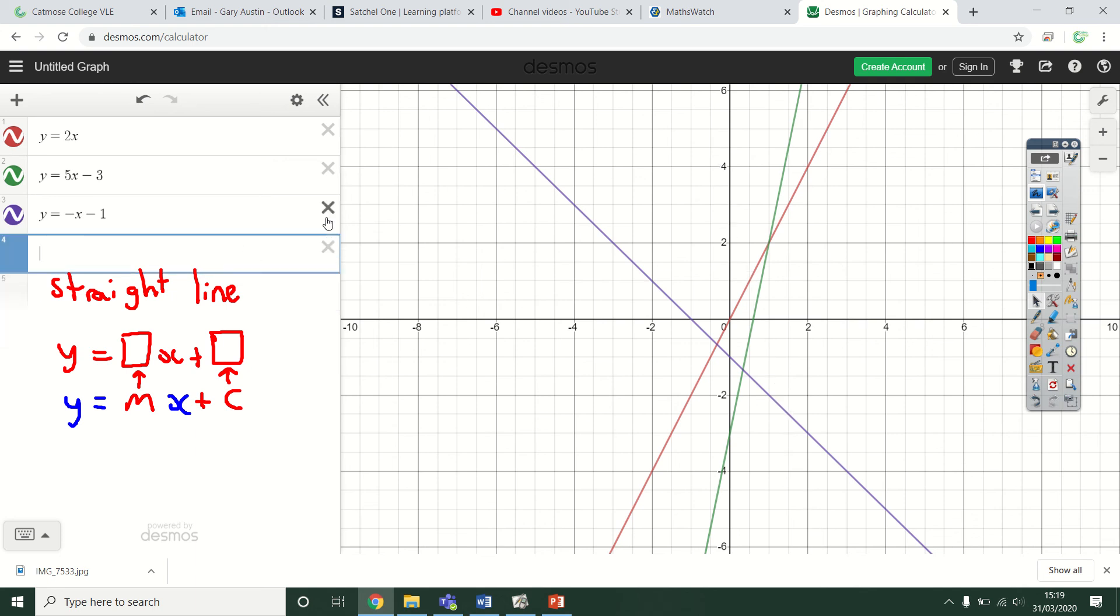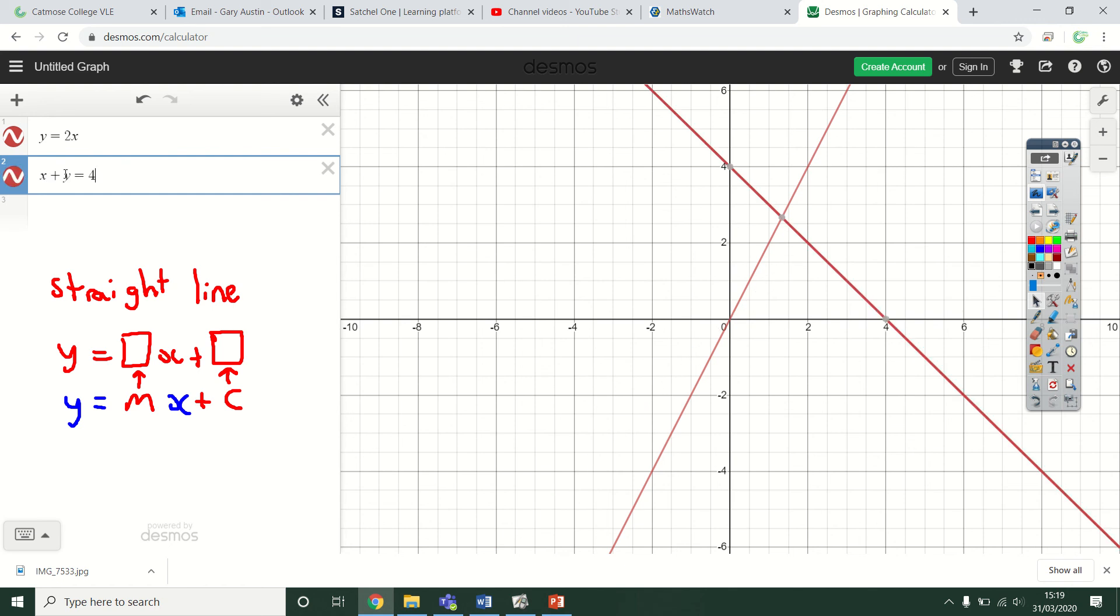Last one I want to do: if I do x plus y equals 4, although it doesn't look exactly like this, it's still a straight line because I can rearrange this equation to make it into the proper form, to make it look like this.